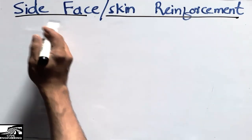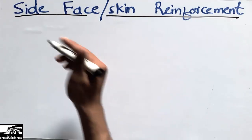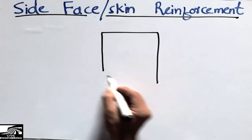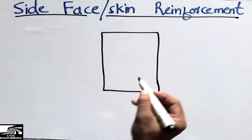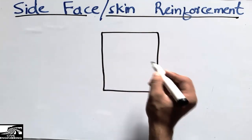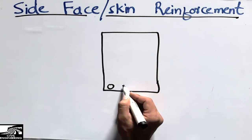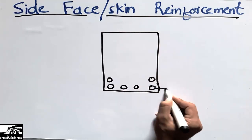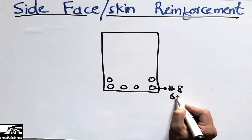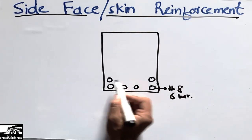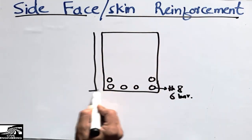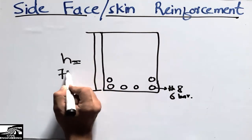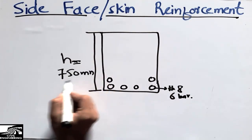There are two codes that tell us about the use of this reinforcement. Consider a beam that has been designed as per codes, with its depth being too much — for example, with six number-eight bars at the bottom. When the depth of this beam exceeds 750 mm, according to the Indian Standard code, we need to apply this special reinforcement.